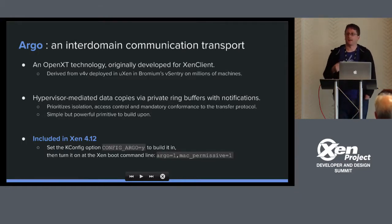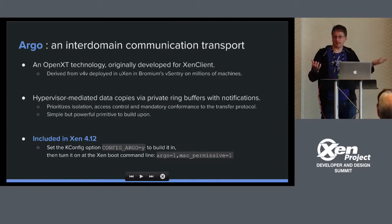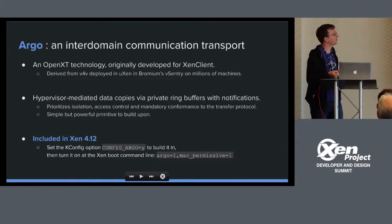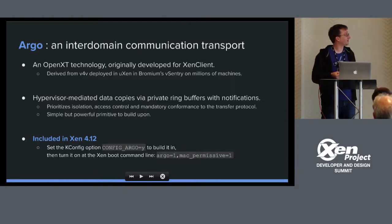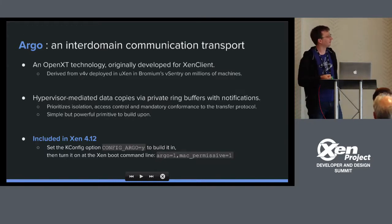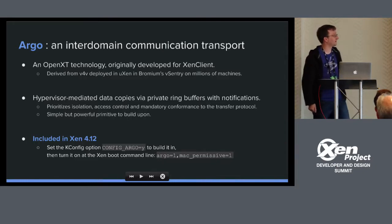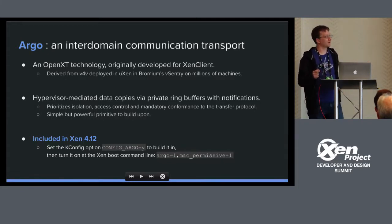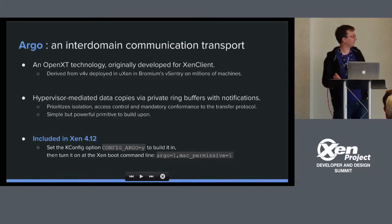Argo is an inter-domain communication transport. It is a means of transferring data between VMs running on the same host and it was developed originally for Xen Client. It's been around for an extended period of time. It was known as V4V when it came into creation, and subsequently V4V has been developed and extended and incorporated in Bromium's vSentry product and is deployed on millions of machines. Argo is derived from both V4V, the original technology from Xen Client, and with some input from the Bromium extensions, but it is now its own thing incorporated into Xen.